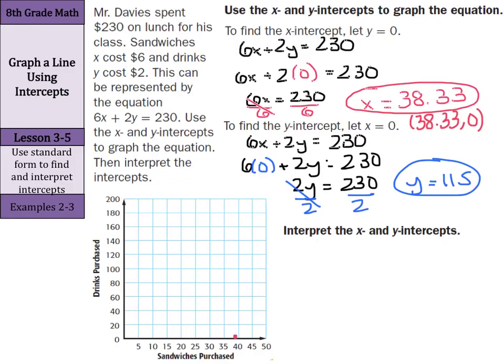And for my y-intercept, if x equals 0, this means this is (0, 115), which is right around there. And now, I can draw a line connecting those two points. And there's my graph.